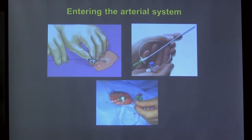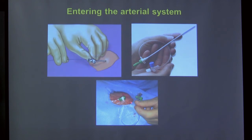Arterial access involves local anesthetic, then a needle, then a guidewire, and finally a sheath — a device that remains in the vessel throughout the procedure, allowing other instruments to be passed through it. The sheath also has a side port for flushing and injecting contrast or medications.